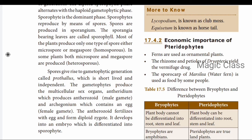The gametophytic generation in pteridophytes is called the prothallus. It is short-lived and independent. The gametophyte produces multicellular sex organs: anthridium (male) and archegonium (female). Anthridium produces antherozoids (sperm), and archegonium produces eggs. The sperm fertilizes the egg to form the zygote, which develops into an embryo and then differentiates into the sporophyte.